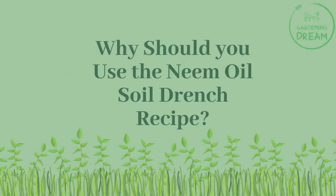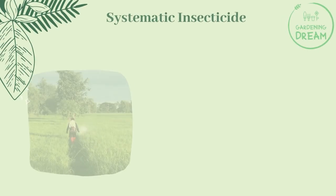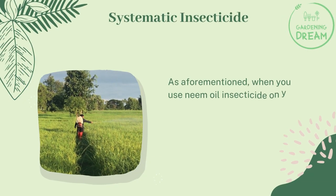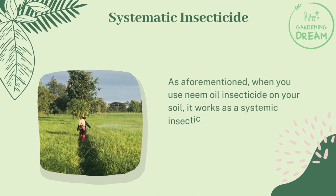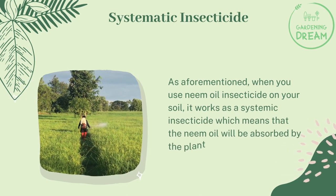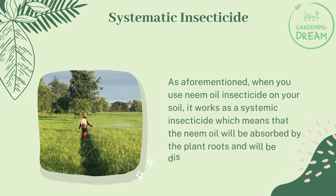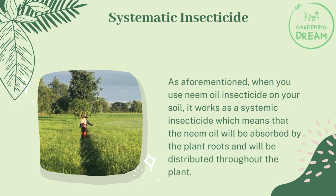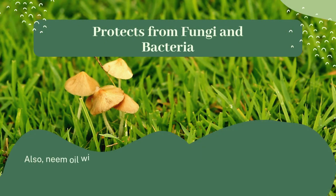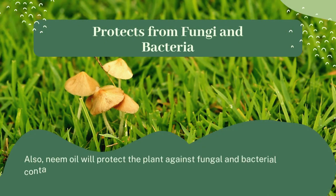Why should you use the neem oil soil drench recipe? As a systemic insecticide — when you use neem oil insecticide on your soil, it works as a systemic insecticide, which means the neem oil will be absorbed by the plant roots and distributed throughout the plant. It also protects from fungi and bacteria.